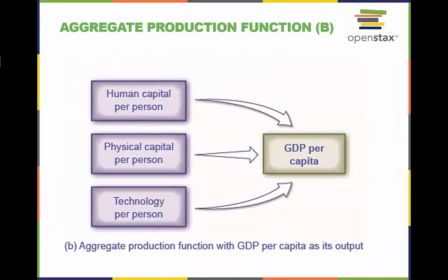This aggregate production function has GDP per capita as its output. Because it is calculated on a per-person basis, the labor input is already figured into the other factors and does not need to be listed separately.